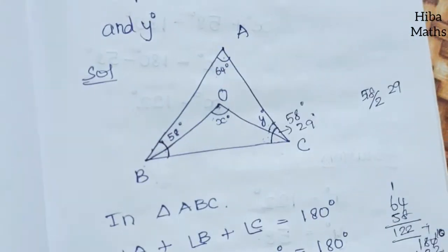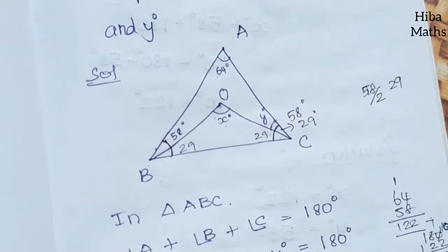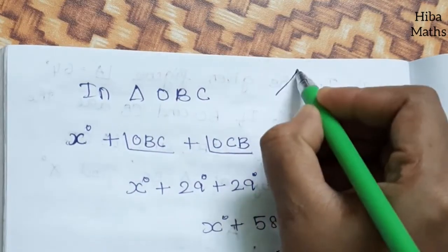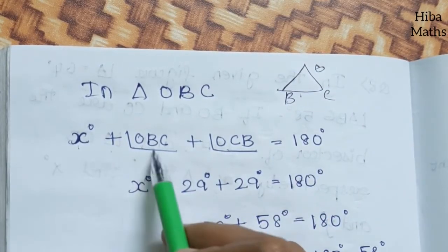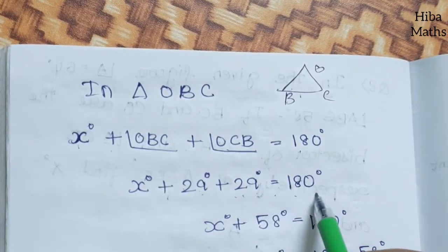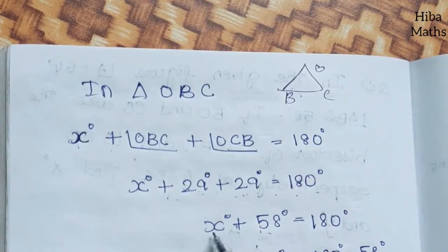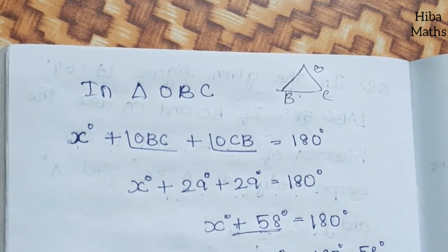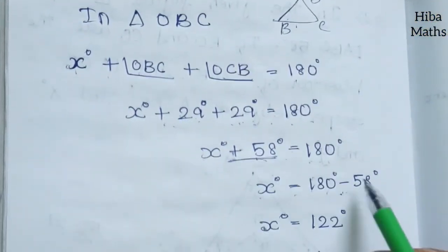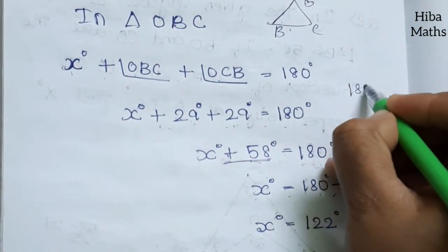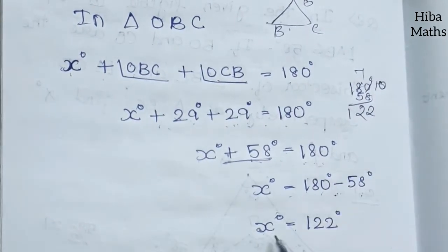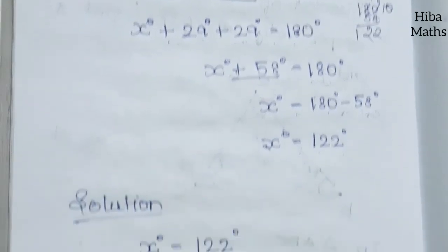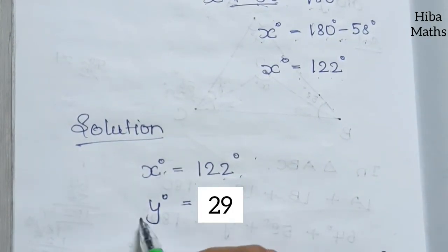So in triangle OBC, the sum of interior angles equals 180 degrees. Therefore X degrees plus 29 degrees plus 29 degrees equals 180 degrees. X degrees plus 58 degrees equals 180 degrees. Thus X degrees equals 180 minus 58, which gives X equals 122 degrees. So X equals 122 degrees and Y equals 58 degrees.